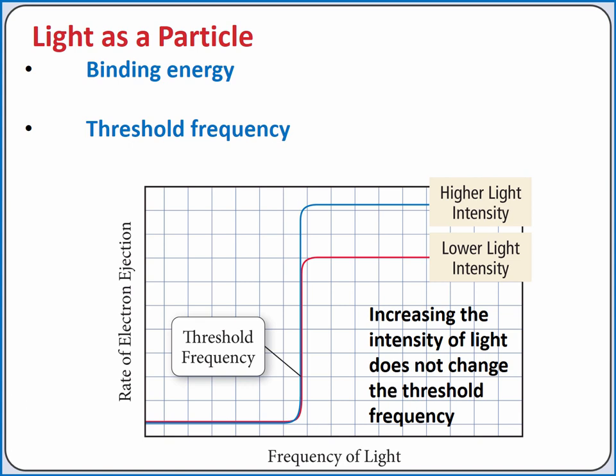If light only acts as a wave, we could increase the amount of energy by increasing the amplitude of the wave, which corresponds to increasing the intensity of the light. However, when the experiment is run with a higher intensity light, the threshold frequency doesn't change.